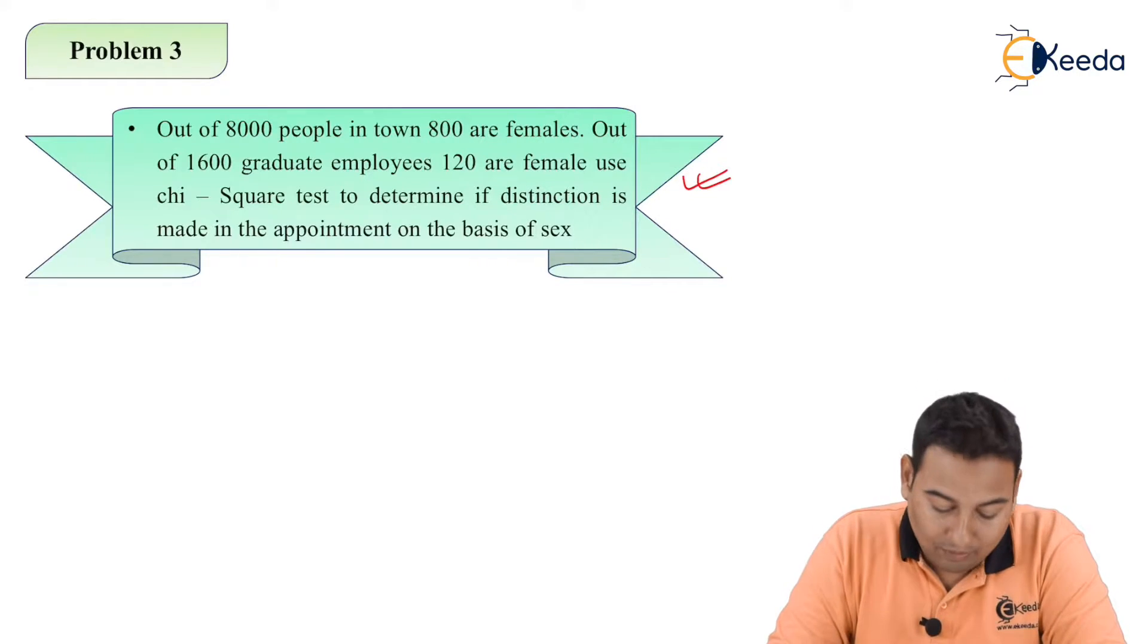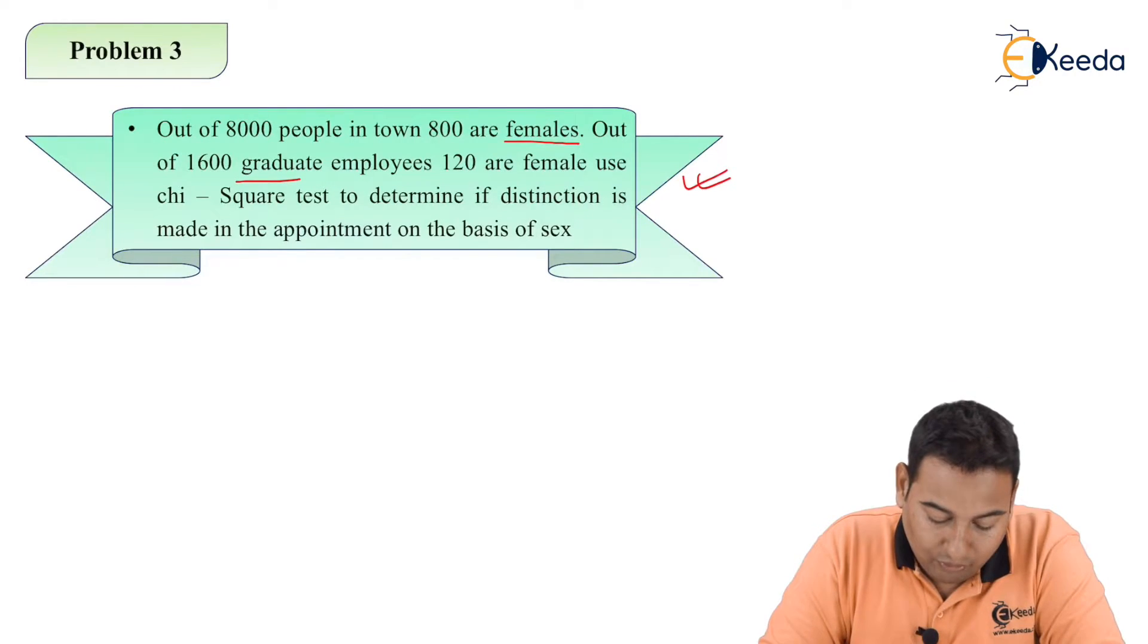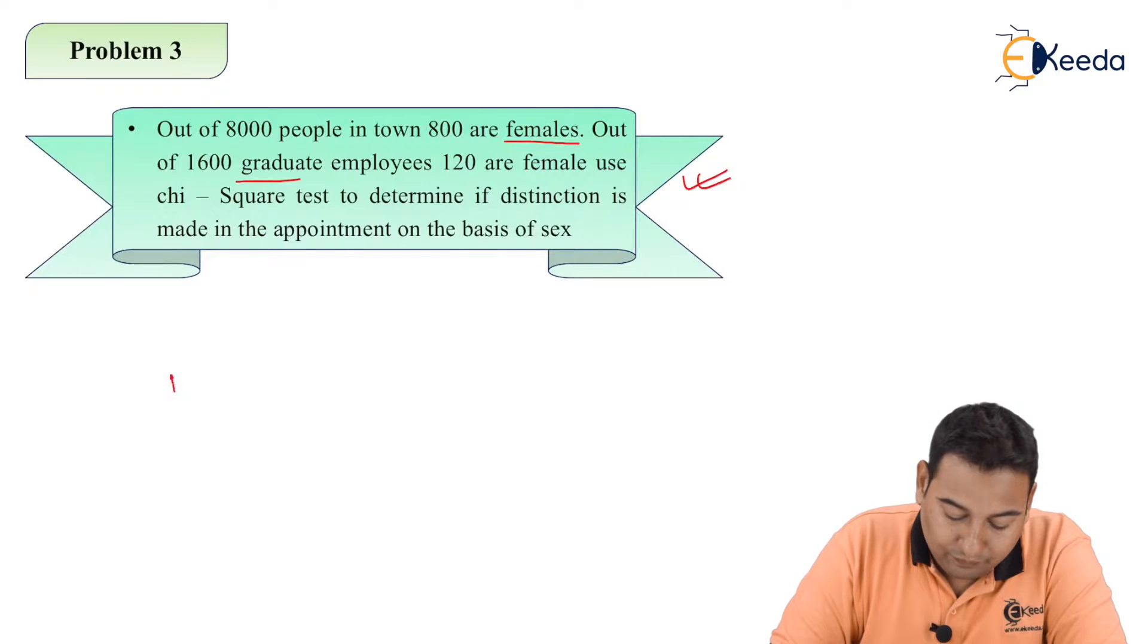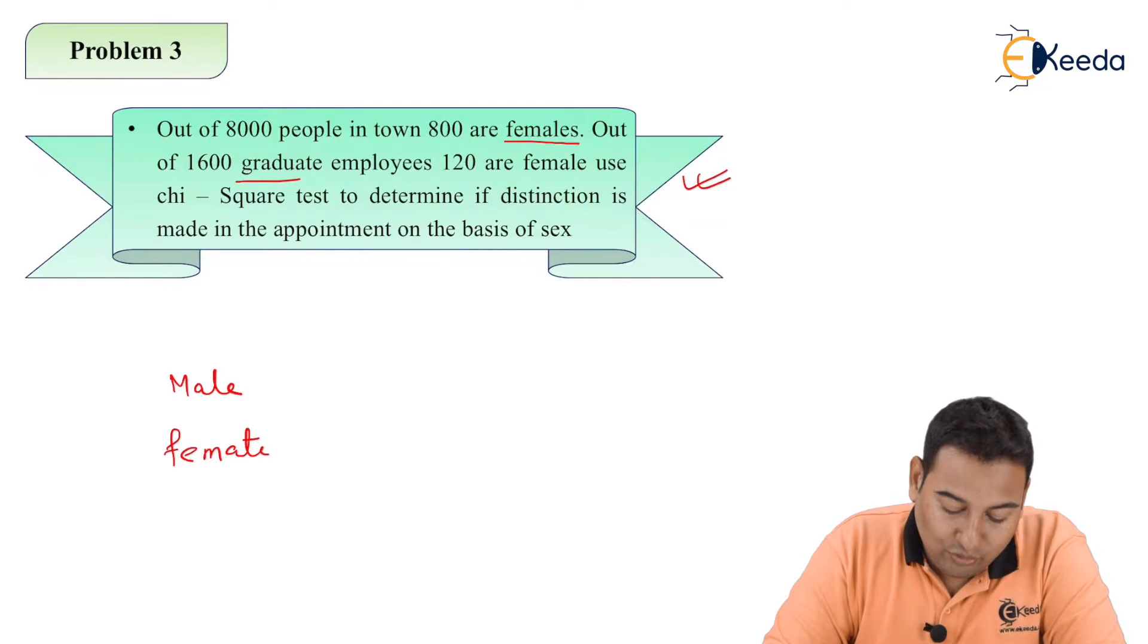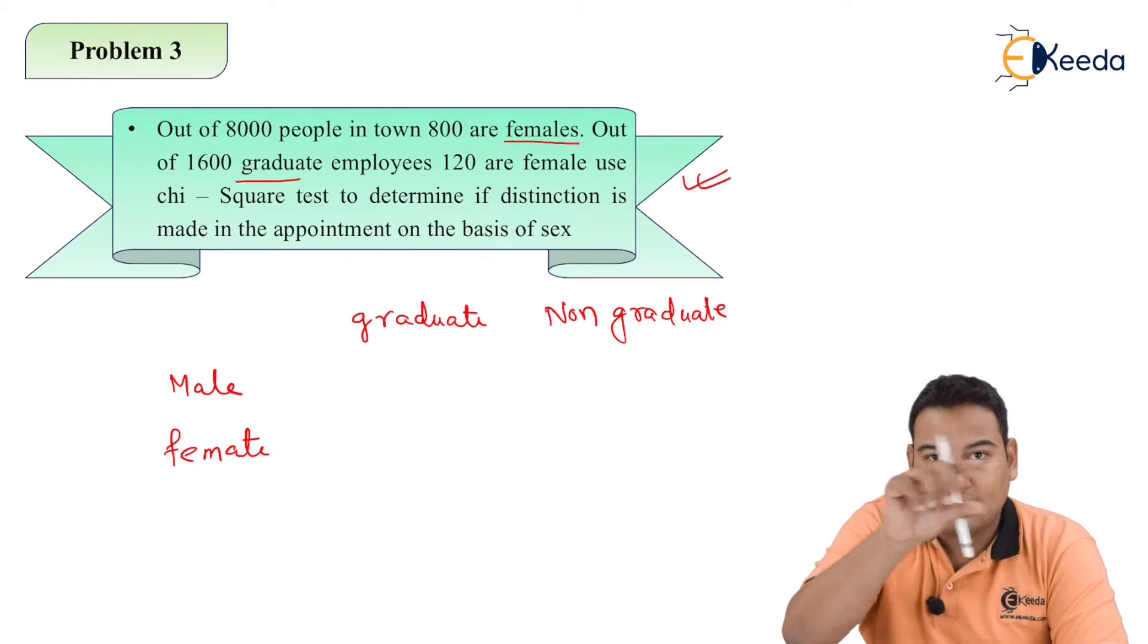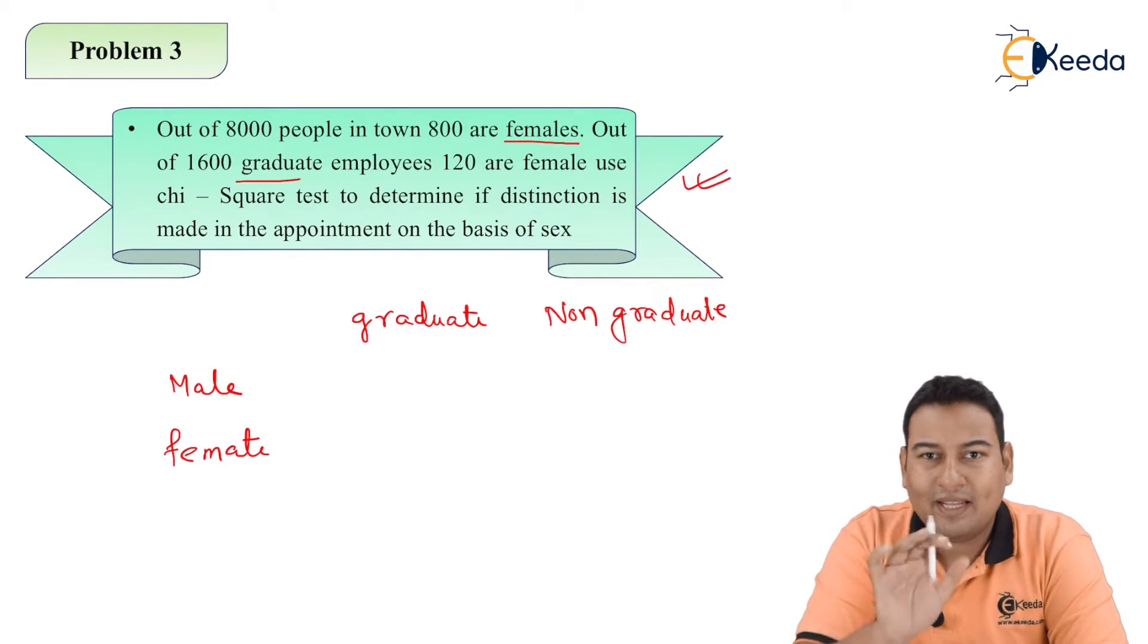Let's identify the attributes given in the problem. Out of 8000 people in town, 800 are females, so one attribute is females. 1600 graduate employees, so graduate is another attribute. So one attribute is female, the second attribute is male. And the second category is graduate and non-graduate. You can write male-female and graduate-non-graduate in any way.